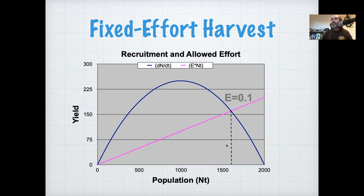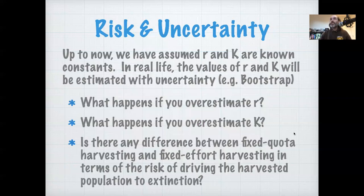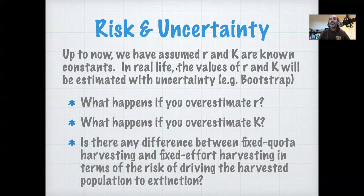We see this inherent advantage of the fixed effort approach, but next I want to talk about how that translates into something we haven't yet discussed in the population context but covered extensively in this course leading up to population modeling — which is uncertainty, and specifically how uncertainty translates into risk. Up to now we've assumed R and K are known constants, but in real life the values of R and K will be estimated with uncertainty, for example using the bootstrapping methods discussed earlier. So what happens if you overestimate R or overestimate K, and is there any difference between fixed quota and fixed effort in terms of risk of driving the population to extinction?